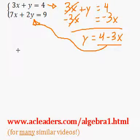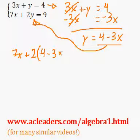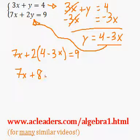Always really important to plug everything in brackets though, or in parenthesis, I can't say that word properly, into the other equation. So here we have 7x plus 2 times 4, 8, 2 times negative 3x, negative 6x equals 9.